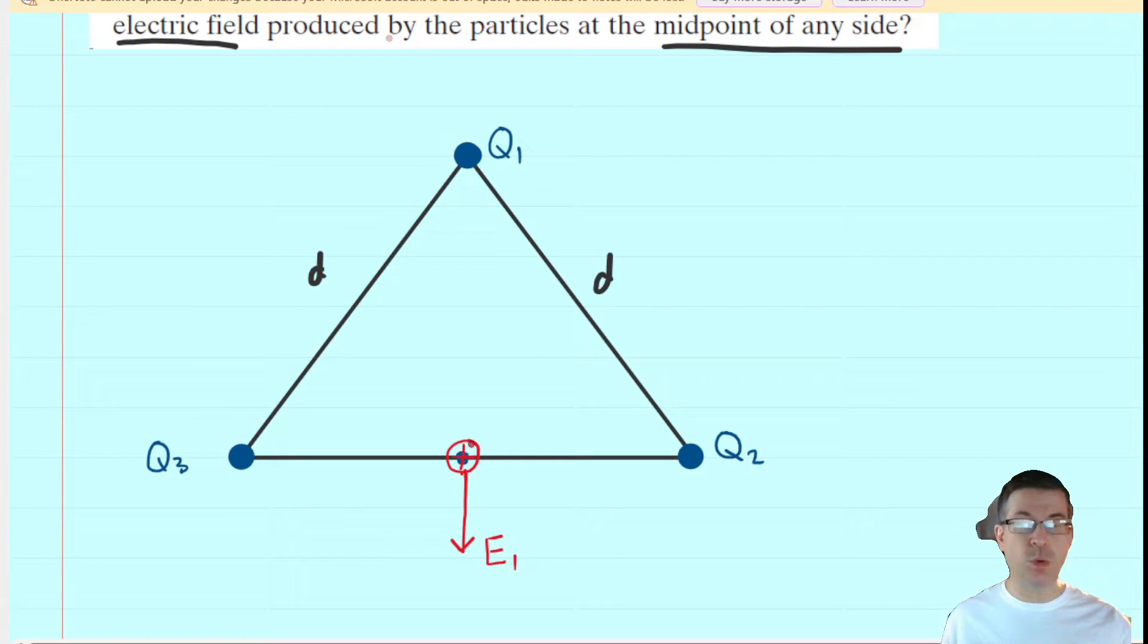You ask the same question regarding Q2. Q2 is positive. It would also repel this positive test charge. So it's going to push that positive test charge in this direction. We would label that electric field E2. And then finally, Q3 being positive would push the positive test charge in this direction, and we would label that electric field E3.